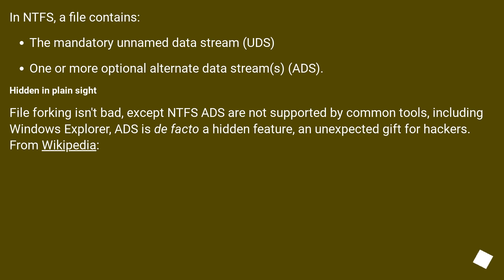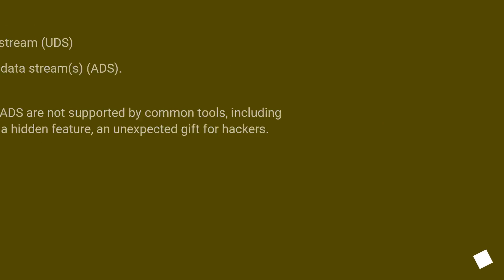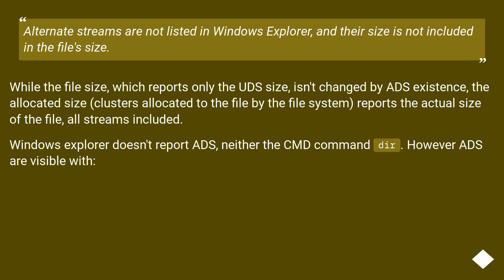In NTFS, a file contains the mandatory unnamed data stream (UDS) and one or more optional alternate data streams (ADS). ADS are hidden in plain sight — file forking isn't bad, except NTFS ADS are not supported by common tools, including Windows Explorer. ADS is de facto a hidden feature and an unexpected gift for hackers. Alternate streams are not listed in Windows Explorer, and their size is not included in the file's size. While the file size reports only the UDS size, the allocated size — clusters allocated to the file by the file system — reports the actual size of the file, all streams included.